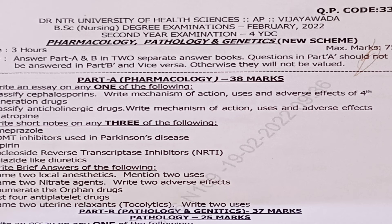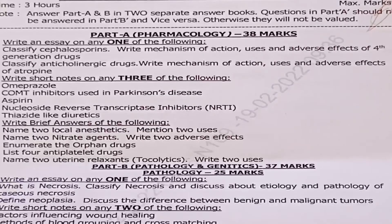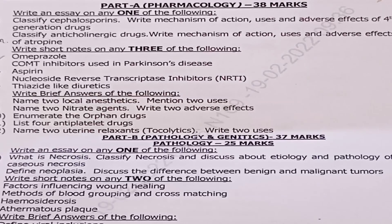Next, question paper code 338 — Pharmacology, Pathology and Genetics, February 2022. Part A is Pharmacology for 38 marks, and Part B is Pathology and Genetics for 37 marks; each part is to be written in a separate answer booklet. Essay Question 1: classify cephalosporins, write mechanism of action, uses and adverse effects of a fourth-generation drug. Question 2: classify anticholinergic drugs, write mechanism of action, uses and adverse effects of atropine — this essay question carries 13 marks.